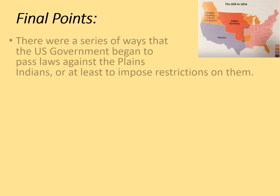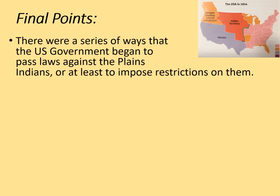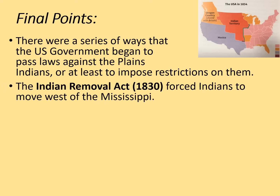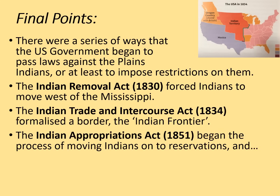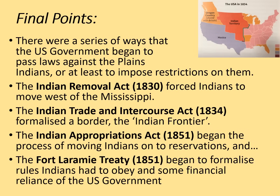Some final points. There were a series of ways the US government began to pass laws against the Plains Indians or impose restrictions upon them. The Indian Removal Act of 1830 forced Indians to move west of the Mississippi. The Indian Trade and Intercourse Act of 1834 formalized a border — the Indian frontier. The Indian Appropriations Act of 1851 began the process of moving Indians onto reservations. And finally, the Fort Laramie Treaty of 1851 began to formalize rules Indians had to obey and some financial reliance on the US government.